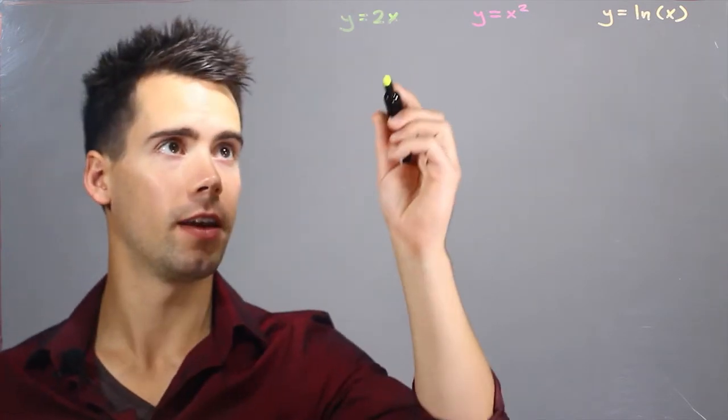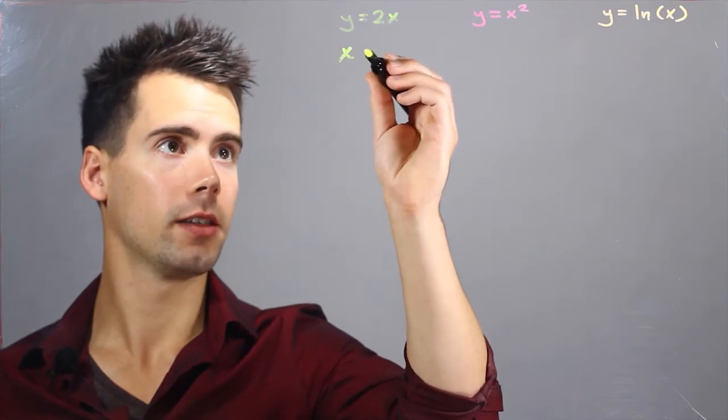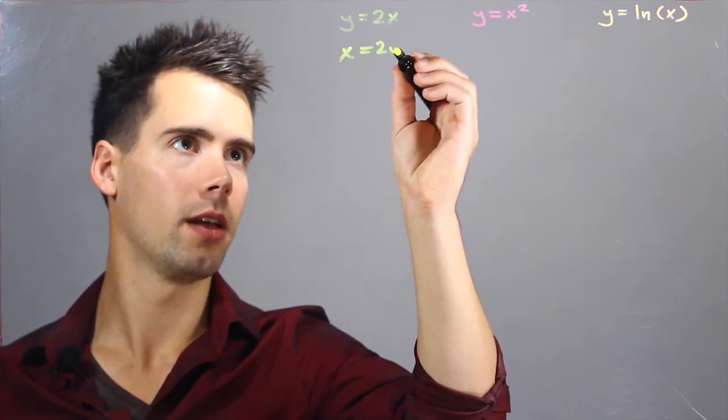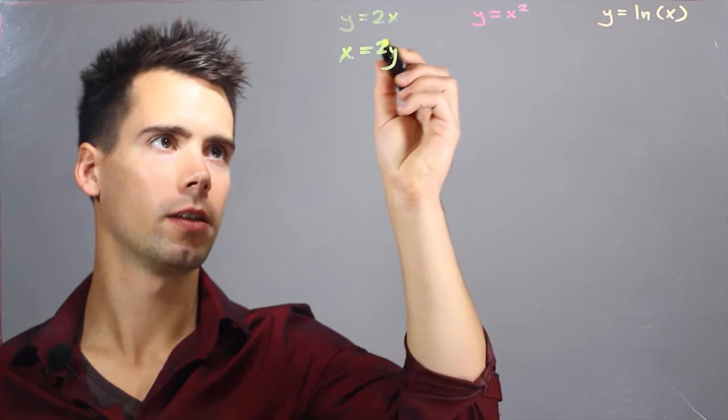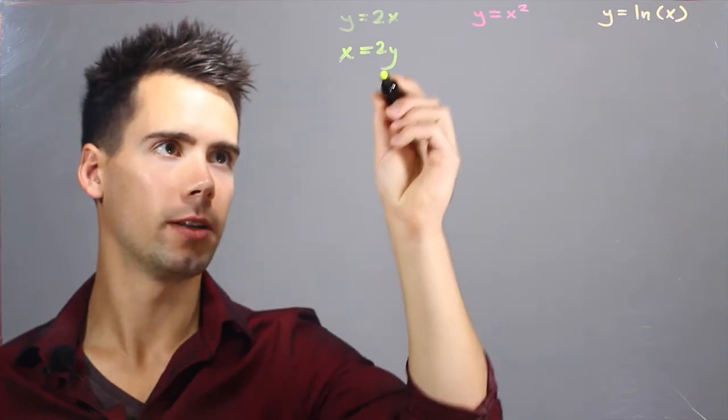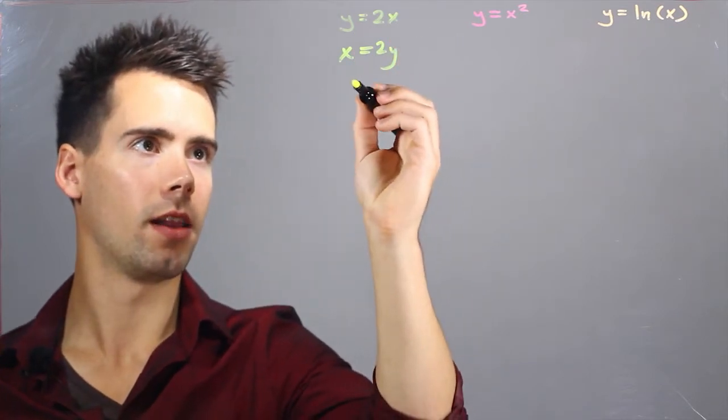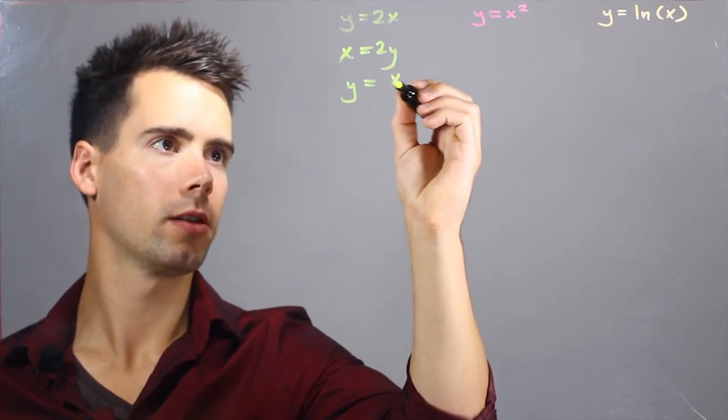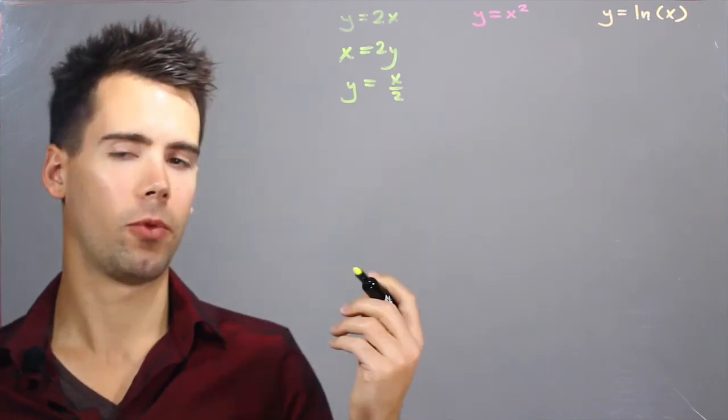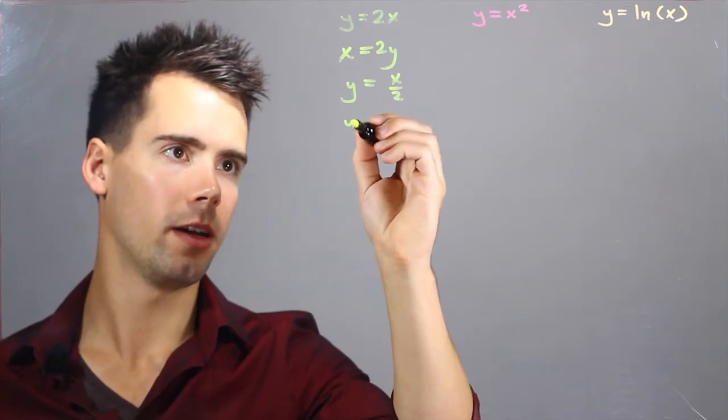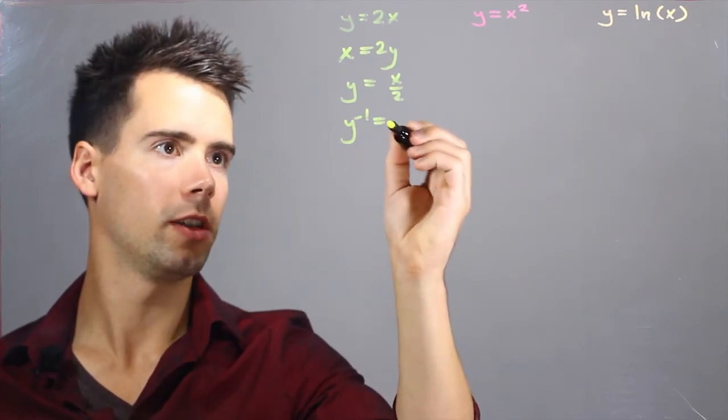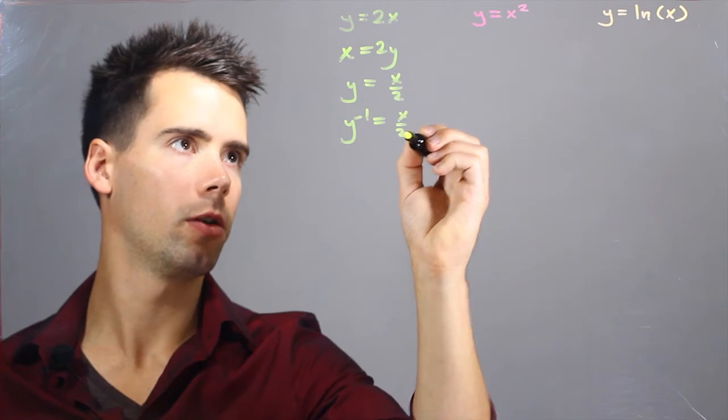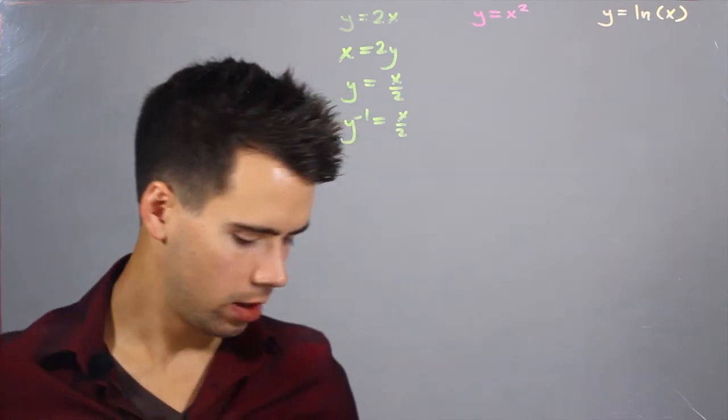So for our first case, we can say that x equals 2y, simply by writing the y's as x and the x as y. Now we can solve for y, and we find that y is equal to x over 2. And now step three, we simply write y as y inverse, which is equal to x over 2.